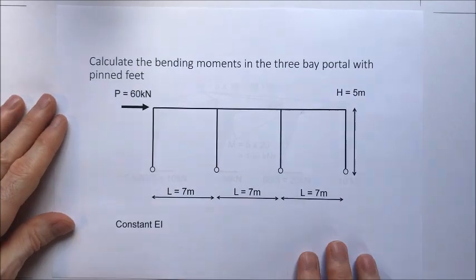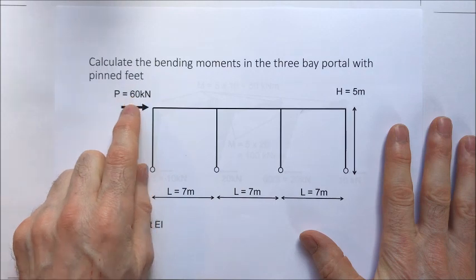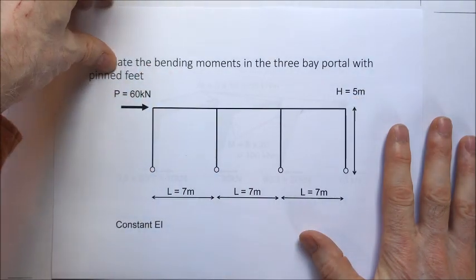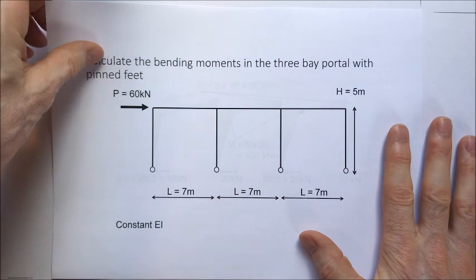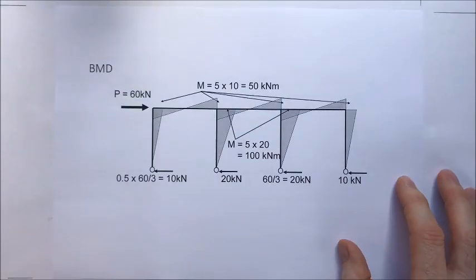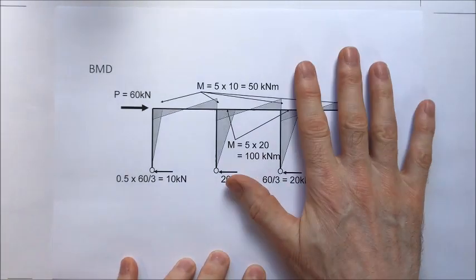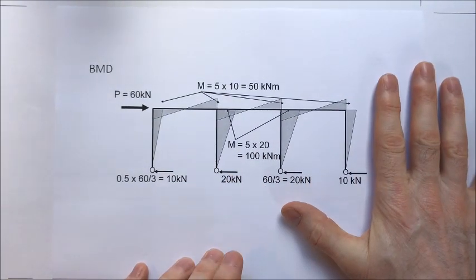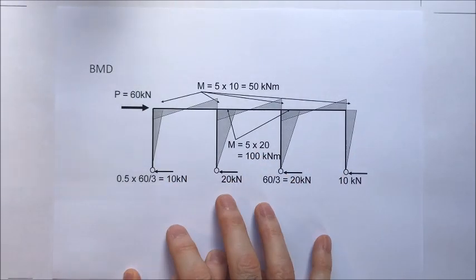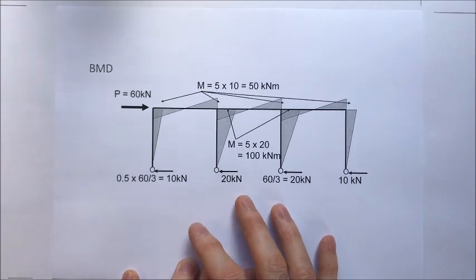Here's a little exercise you can try: a force of 60, a bay width of 7 metres, and a height of 5 metres — what's the bending moment diagram for this frame? The answer is shown on screen. At the end of this video, we're now one step closer to being able to analyse a multi-storey framed structure or a Vierendeel girder. Please take time to carry out some of the exercises in the videos — it will help your understanding. Thank you for watching.